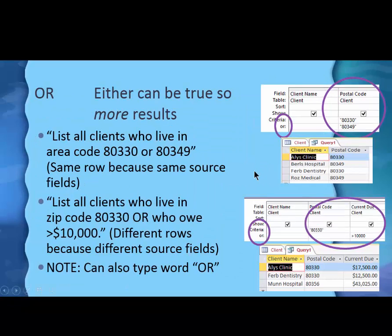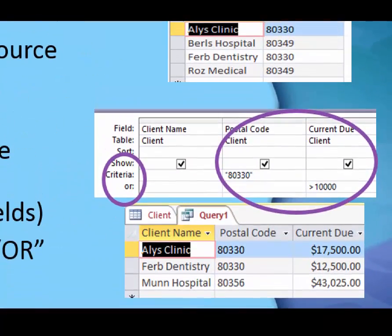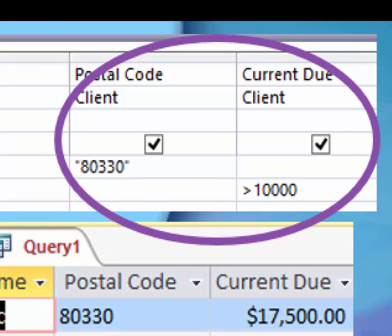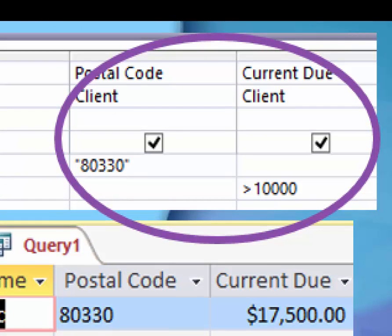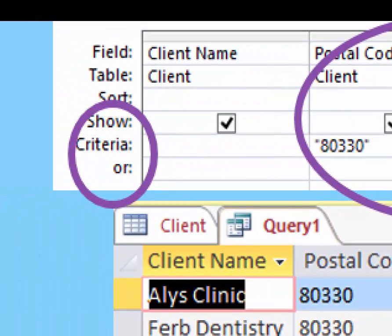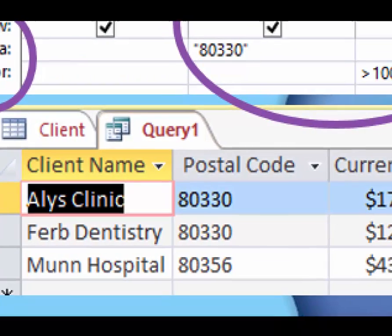Let's try one more. List all clients who live in 80330 or who owe over $10,000. That's similar to what we looked at other times. And so, in this one, I used the two rows, and I put one criteria in one row, and the other criteria in the other row on the OR row.